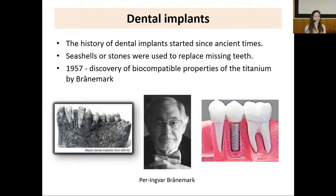At the beginning of my presentation, I'd like to say some words about the history of dental implantology. The history of dental implants started in ancient Egypt, where different seashells and stones were used to replace missing teeth. One of the most important developments in modern implantology occurred in 1957, when a Swedish surgeon discovered the biocompatible properties of titanium. Since that time, titanium has become the main material for manufacturing dental implants.